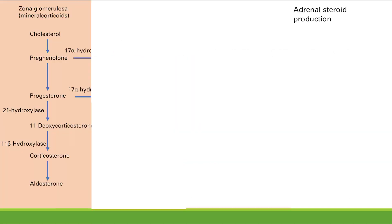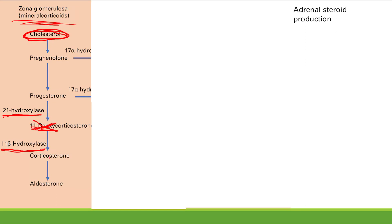Now let's go into the production of these steroids. All aldosterone, cortisol, and sex hormones start from cholesterol, which is the base molecule for adrenal steroid hormones. In the zona glomerulosa, cholesterol is converted to pregnenolone, then to progesterone. Two key enzymes are 21-hydroxylase and 11-beta-hydroxylase. 21-hydroxylase produces deoxycorticosterone, and then 11-beta-hydroxylase removes the deoxy group to yield corticosterone, which is then made into aldosterone.